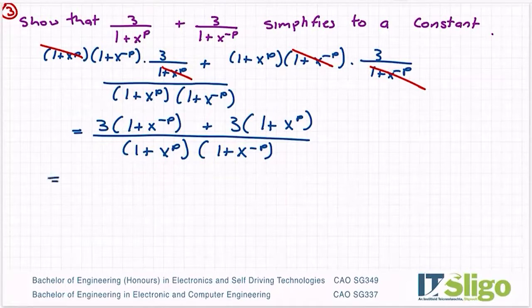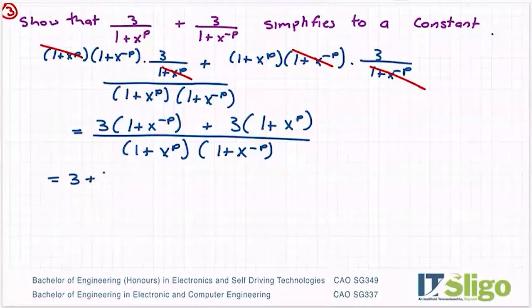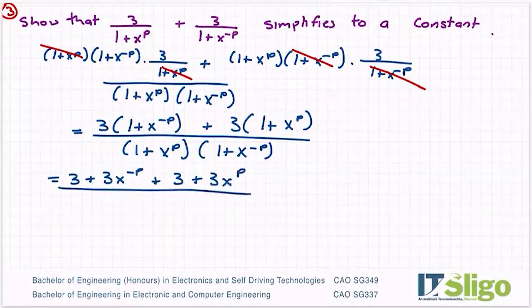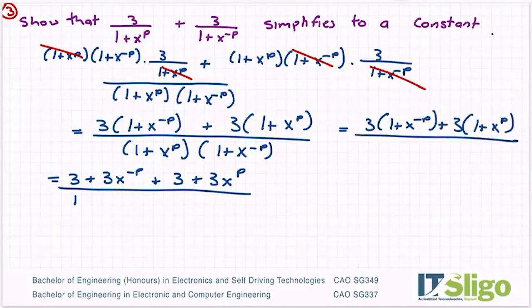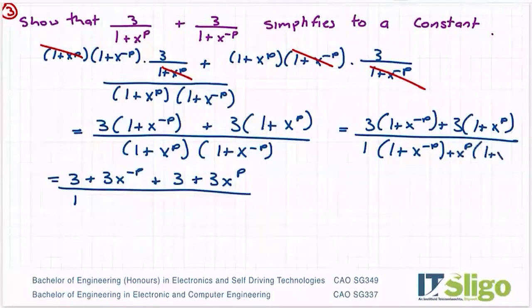Right, let's multiply out. So I have three by one is three, I then have three x to the power of minus p. Plus three again, plus three x to the power of p on the top. And on the bottom, I have one by everything in the second bracket. So one by one is one, one by x to the minus p. So I'll just write out here just in case anybody needs a bit of help as to what I'm doing. I'm just splitting that bottom line and multiplying it. So one by everything in the second bracket. And then you go back for the plus x to the power of p by everything in the second bracket.